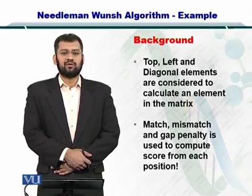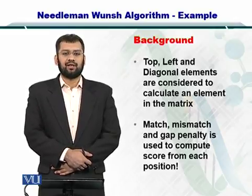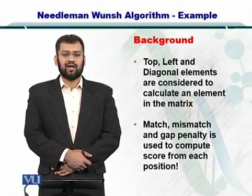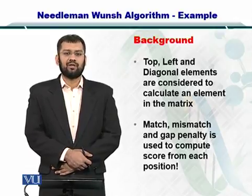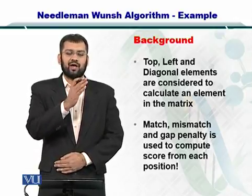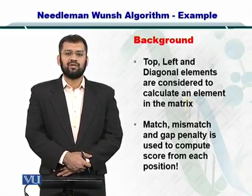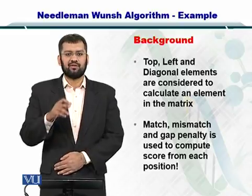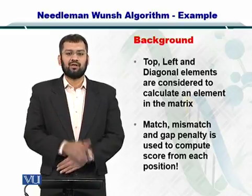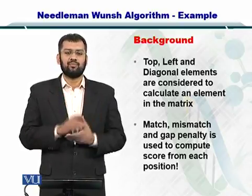In the Needleman-Wunsch algorithm, you compute the alignment matrix element by element. Each element involves the top, diagonal, and left elements to compute it. Once you've reached the bottom right, that is the last element in the matrix, your entire matrix is completely calculated.